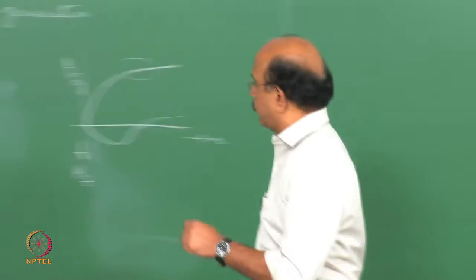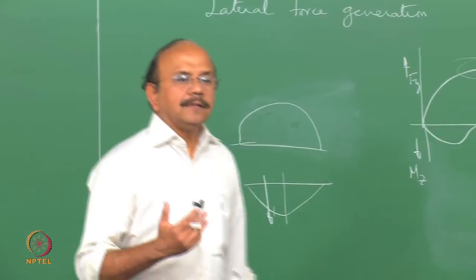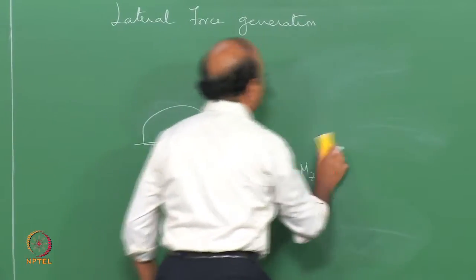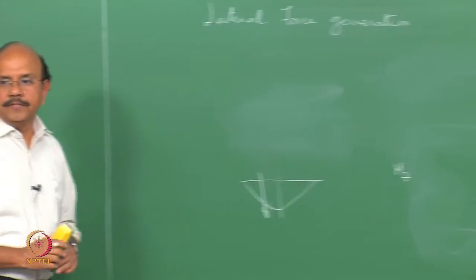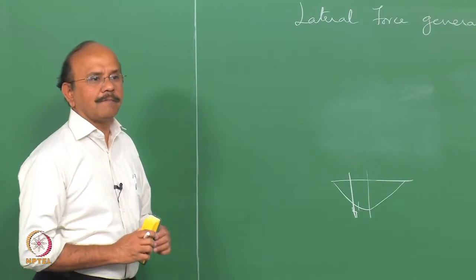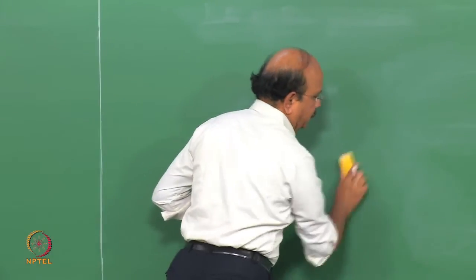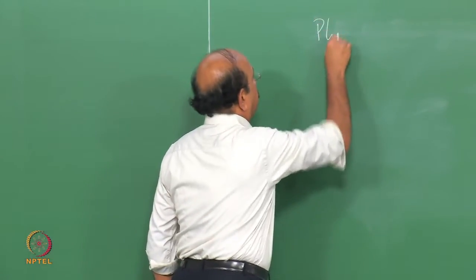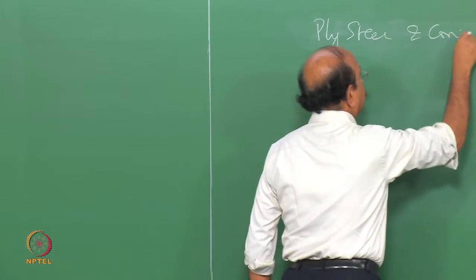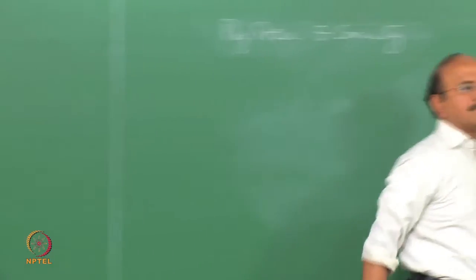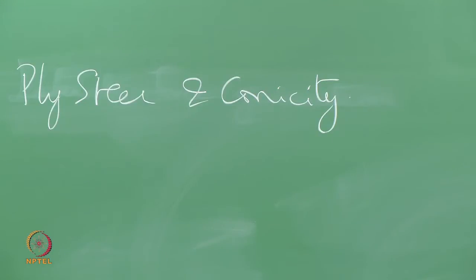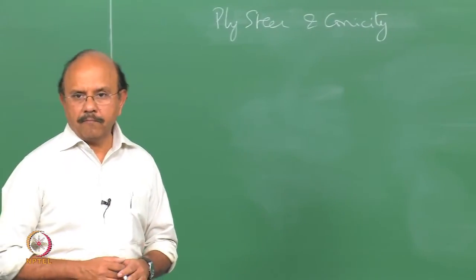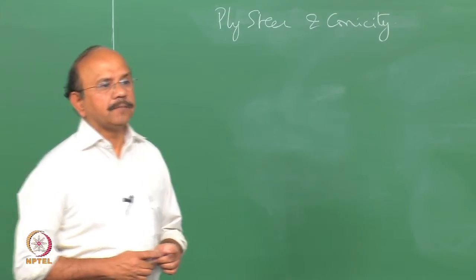The question from last class was: is lateral force development only due to cornering, or are there other means of developing a lateral force? This brings us to a very important topic that tyre manufacturers call ply steer and conicity. Ply steer is something like a steer-like behaviour, and conicity is something like a camber-like behaviour.